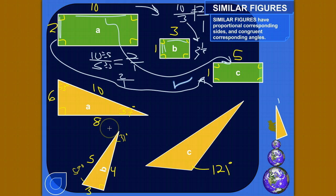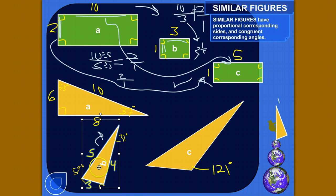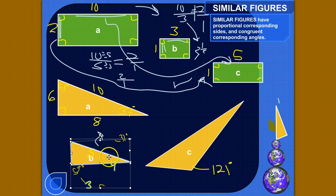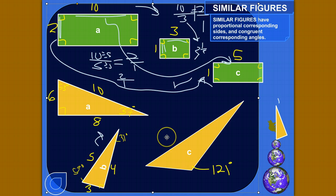Okay, let's look at these triangles — kind of kick it up a notch. These aren't pointed in the same direction, so we need to rotate them in our minds to figure out what the corresponding sides are. We know that this 90 degree angle should line up with that one, so we rotate this triangle mentally. You can see this is how the triangles would line up: this side corresponds to that side, and this side corresponds to this side. Let's test to see if the sides are proportional.